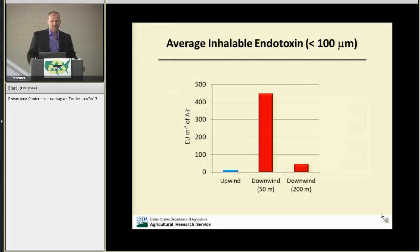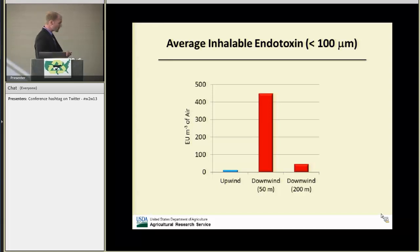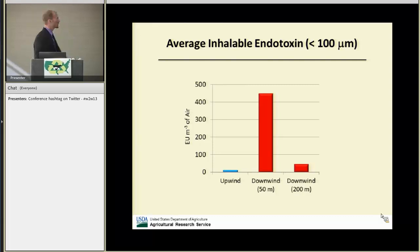This is the concentration of inhalable endotoxin — endotoxin associated with particles less than 100 micrometers in diameter. Once again, the same trend: a fairly low background concentration, then a spike reaching levels reported to cause lung dysfunction and flu-like symptoms, followed by a decrease, slowly approaching background concentrations near 200 meters away from the facility.